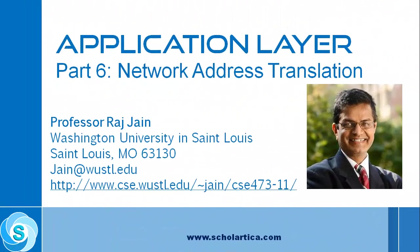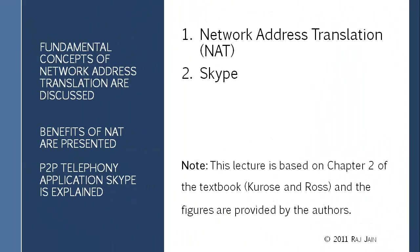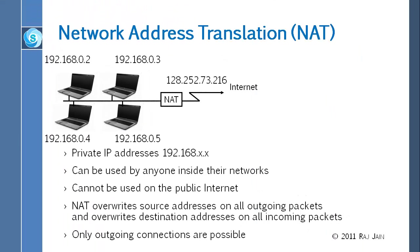Around 1991, the internet started expanding rapidly and we ran out of addresses. Someone proposed having recyclable addresses usable by everybody — these became known as private addresses. Private addresses are like 192.168. Anything beginning with 192.168 is private. 192.169 is not private, 192.167 is not private — only 192.168 is private. Remember that.